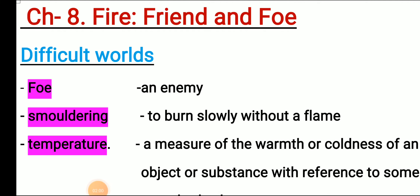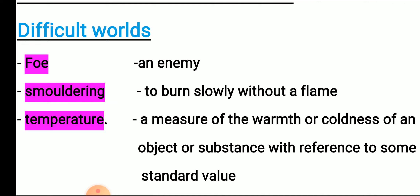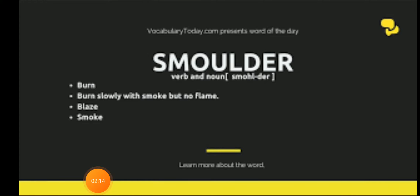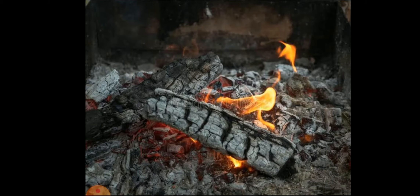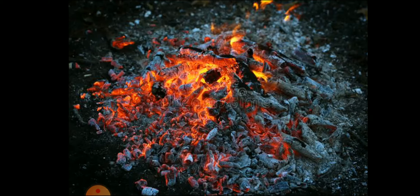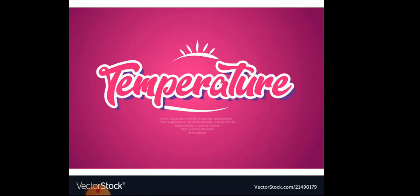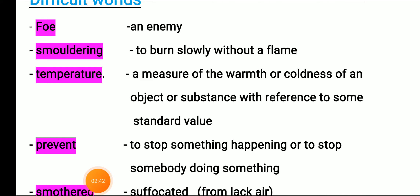The next word is smoldering. Smoldering means to burn slowly without a flame — burning slowly with smoke but no flame. See the word: burn slowly with smoke but not with flame. In the picture you can find fire that is burning slowly, slowly, slowly — that is smoldering.